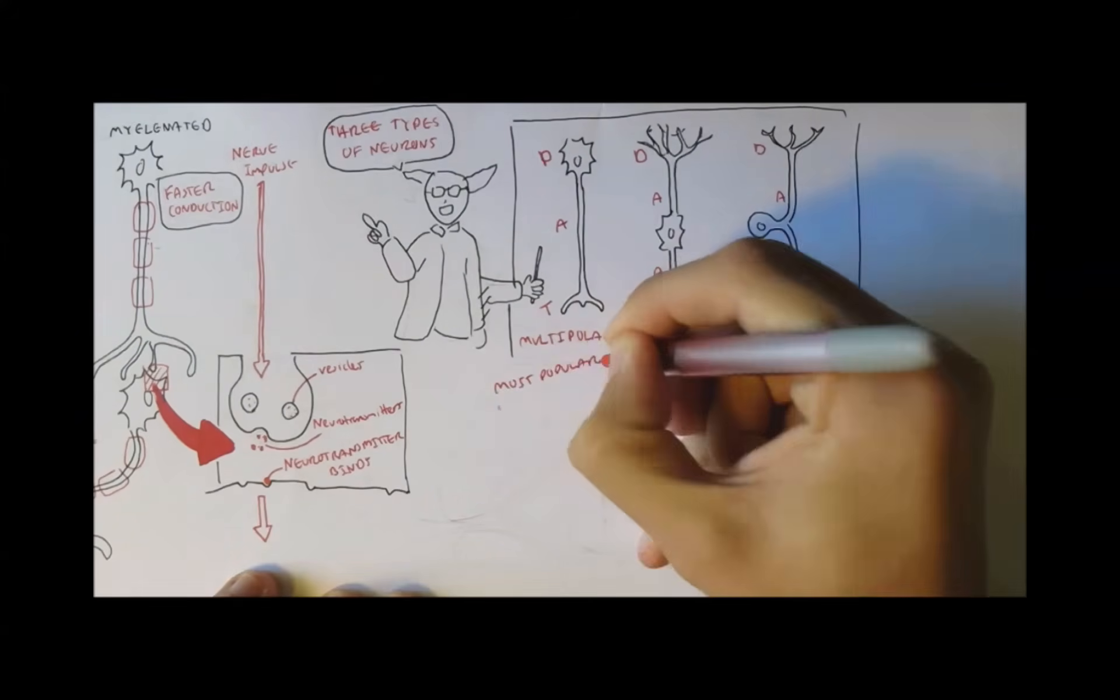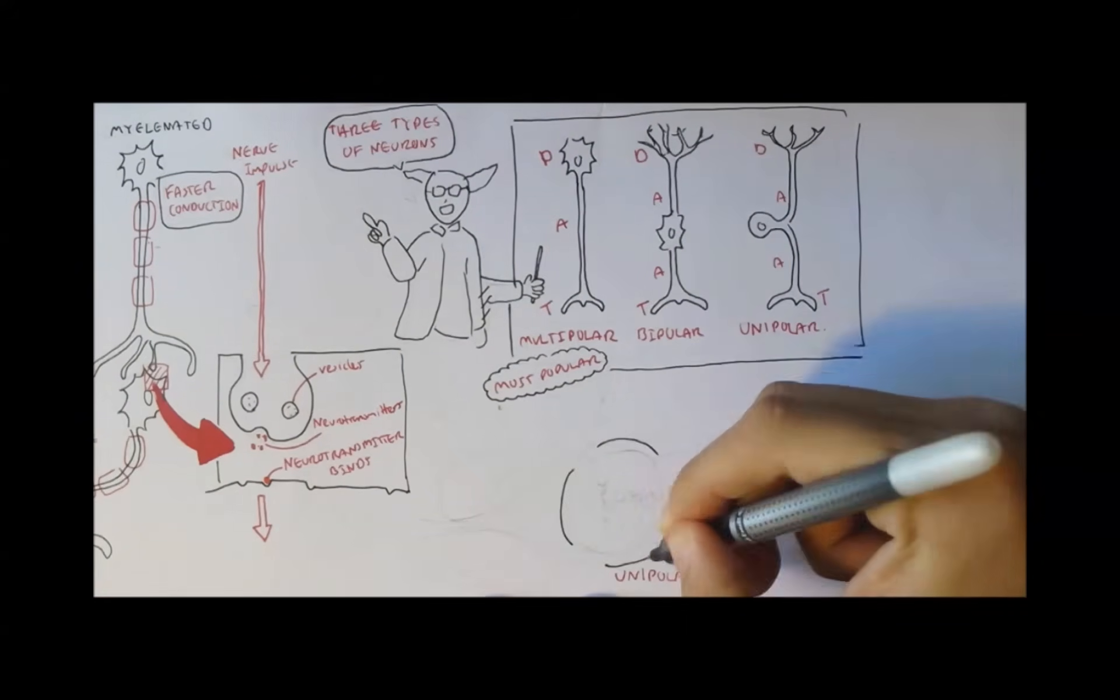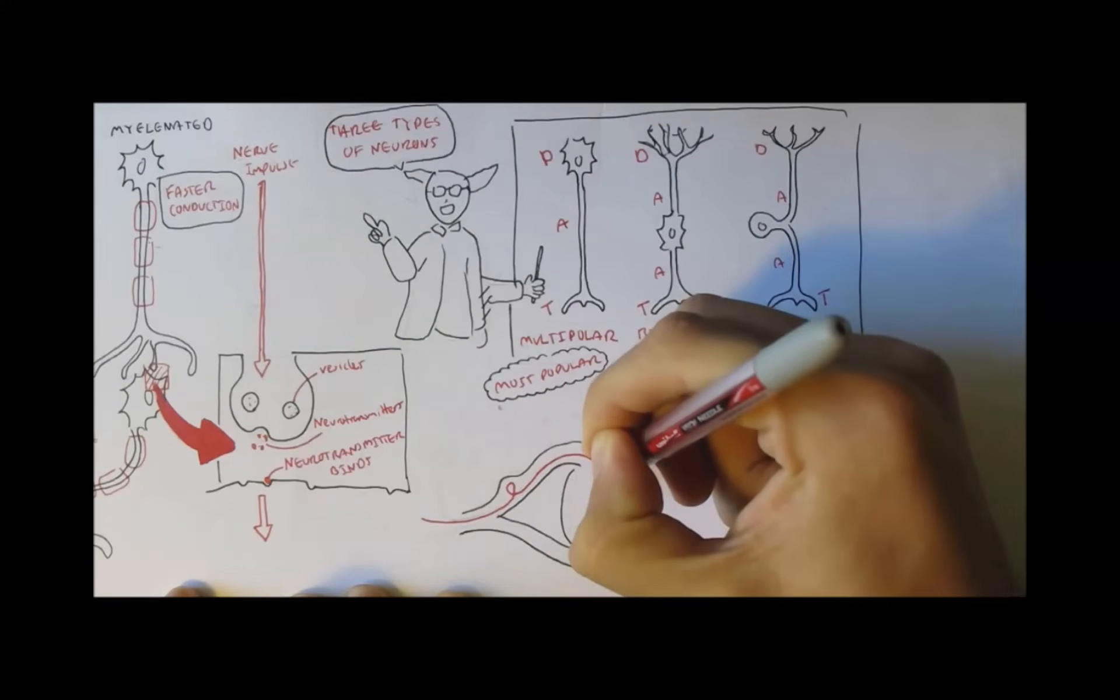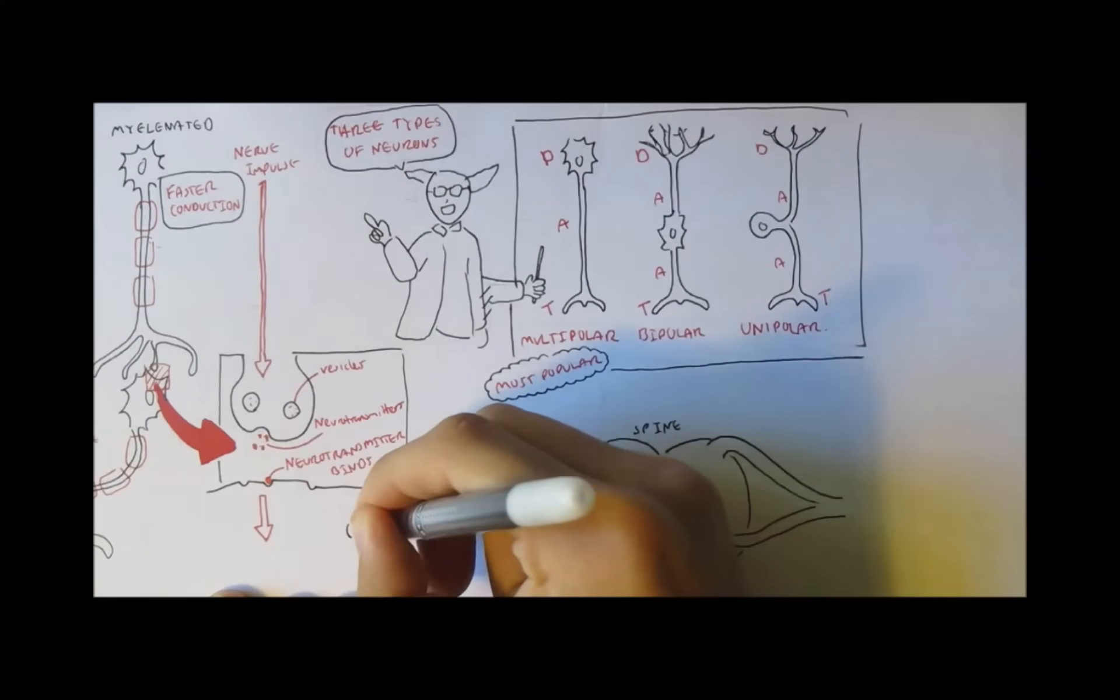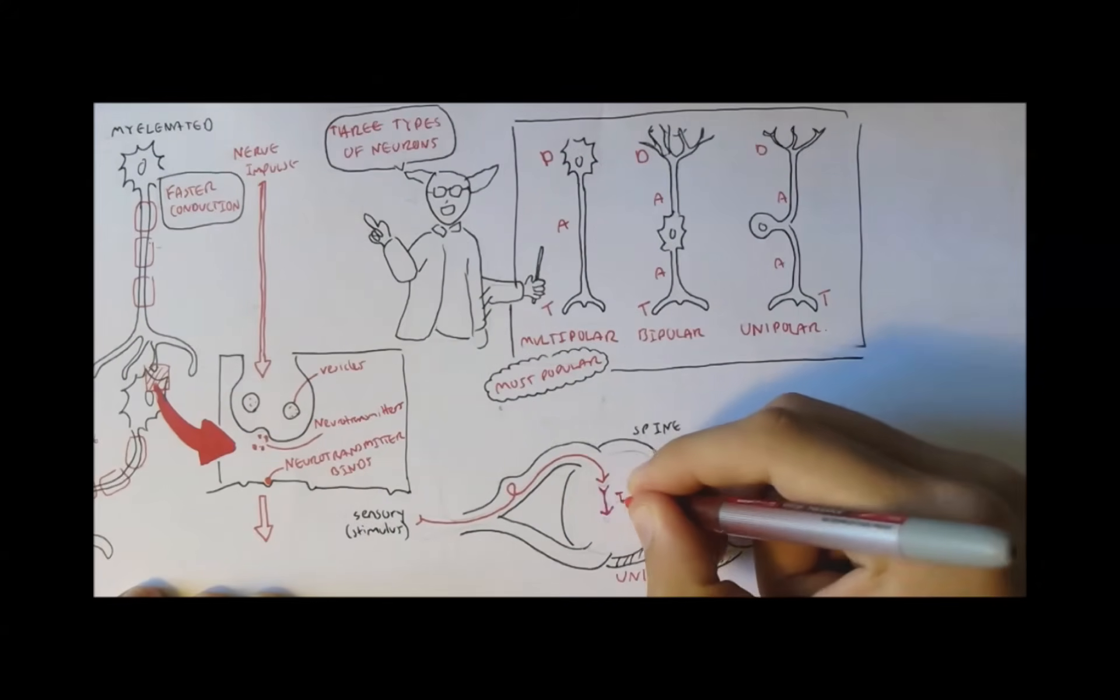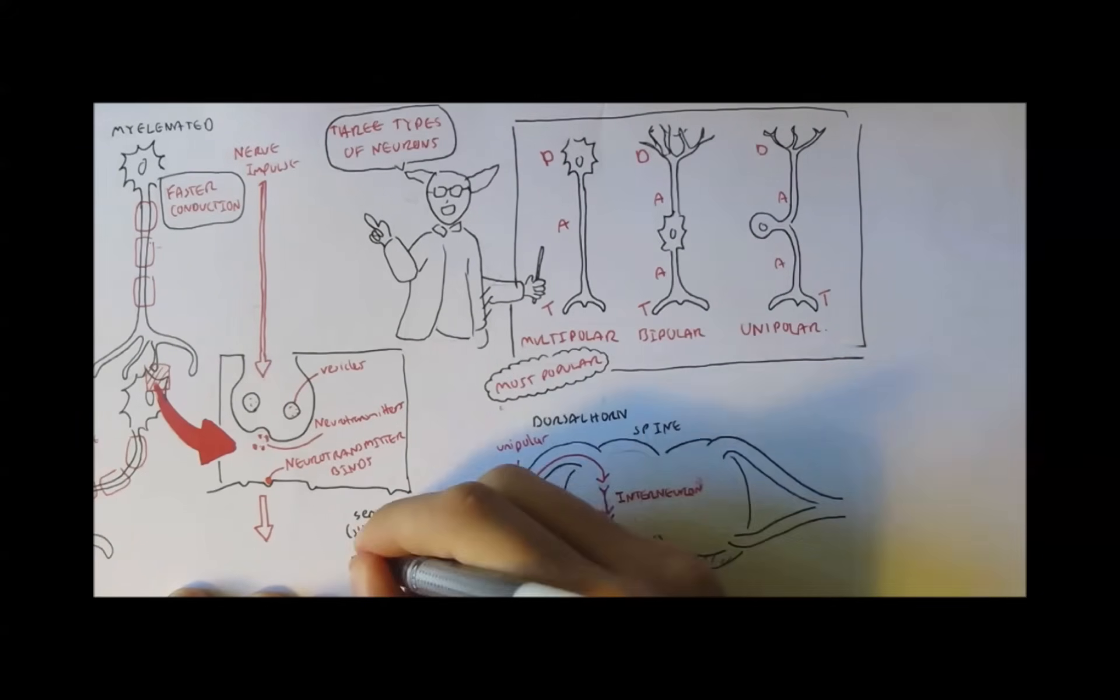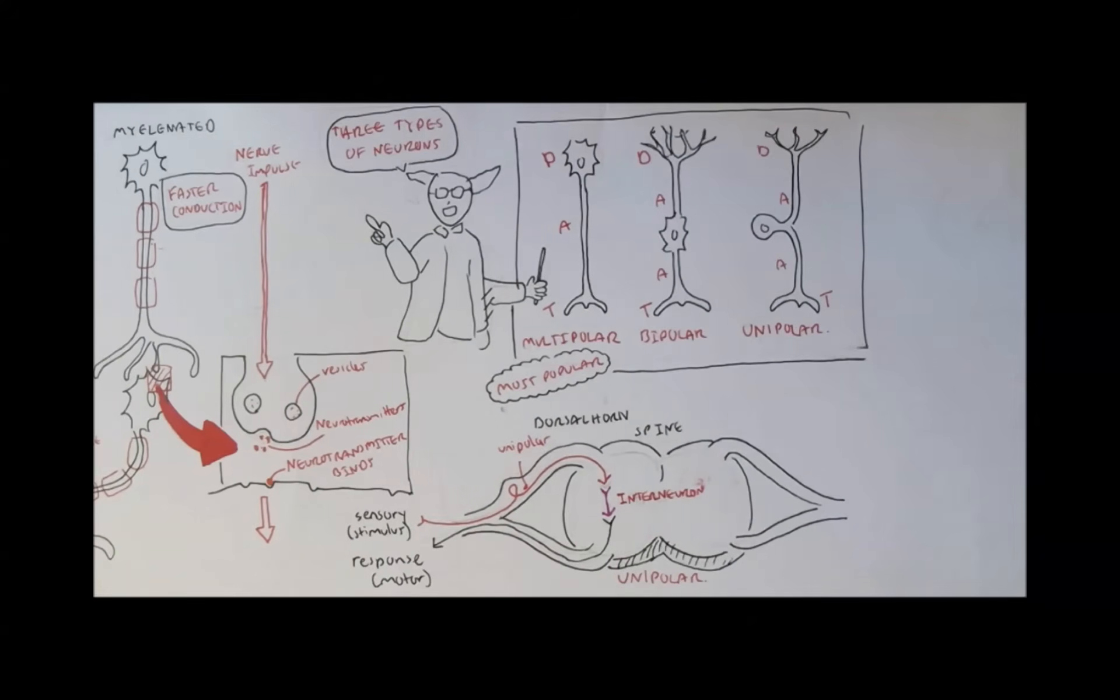Multipolar neurons are the most popular and predominate over the rest. Unipolar neurons are mostly found in the spinal cord. Here we have the unipolar neuron. It acts as a sensory neuron. It travels on the dorsal side of the spine and goes into the central nervous system, where it connects to an interneuron, which then processes this information and then sends out a response via the motor neuron on the ventral side, the front.